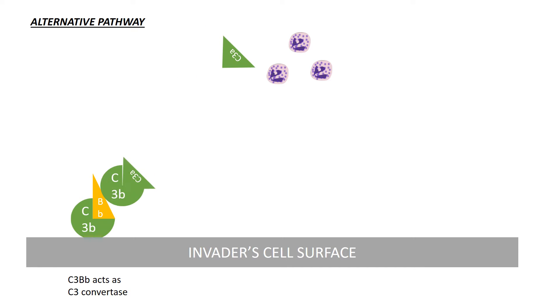Factor B binds C3B on the cell surface. Factor D cleaves factor B, leaving BB which has a chainsaw mechanism. C3BBB acts as C3 convertase which cleaves C3, creating a continuous loop and depositing many C3B molecules on the invader's cell surface.